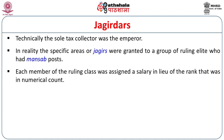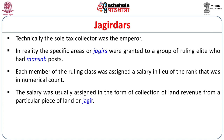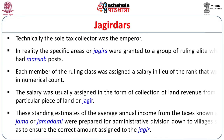Each member of the ruling class was assigned a salary in lieu of the rank, which was a numerical count. The salary was usually assigned in the form of collection of land revenue from a particular piece of land or Jagir. A salary would be converted into a revenue price and assigned to a particular land. These standing estimates of average annual income from taxes were known as Jamma or Jama-dami, prepared for administrative divisions down to villages to ensure the correct amount was assigned to the Jagirs.